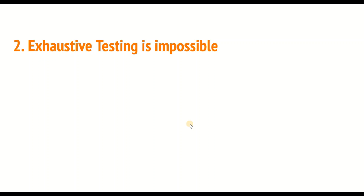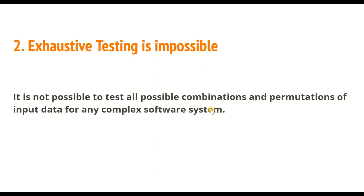The second principle is: exhaustive testing is impossible. It is not possible to test all possible combinations and permutations of input data for any complex software system. It is important to prioritize and select a subset of test cases that are critical to the system's functionality and performance.